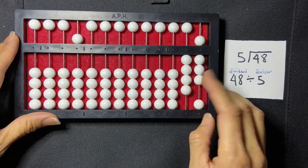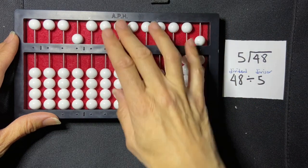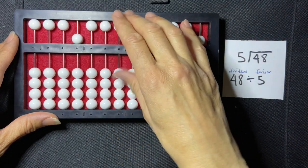So it can't go into 4, so it's going into 48. And I know that it goes in 9 times, so I'm going to set 9 in the units column of my millions period.